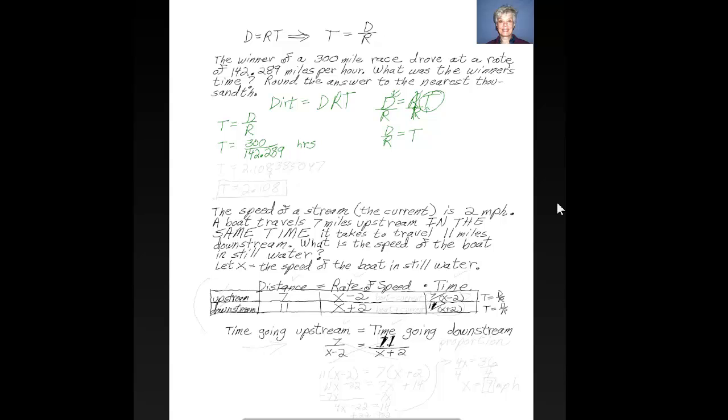And I get T equals 2.108385047, and it probably goes on from there. The instructions say to round to the nearest thousandth, and that is the third decimal place. So my answer is going to be T equals 2.108. Got it.